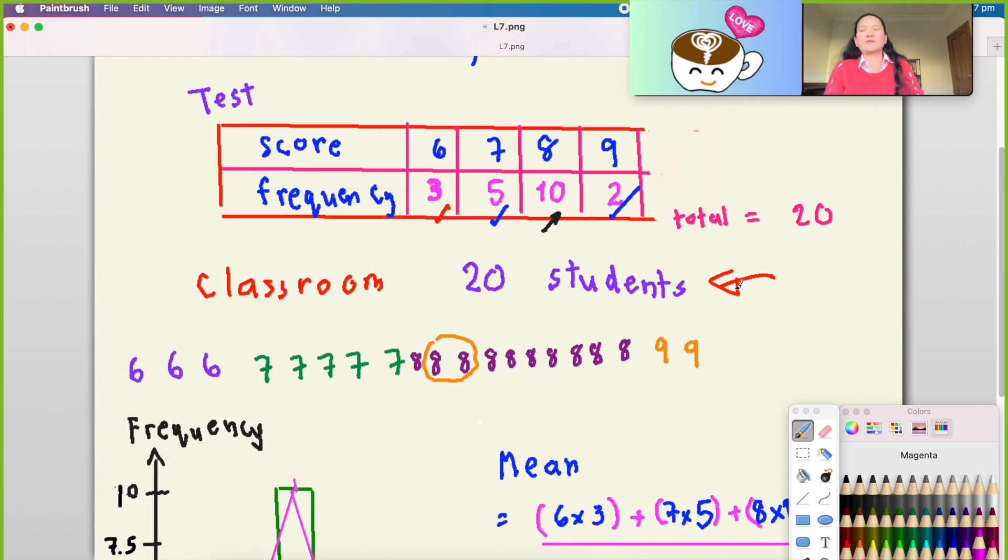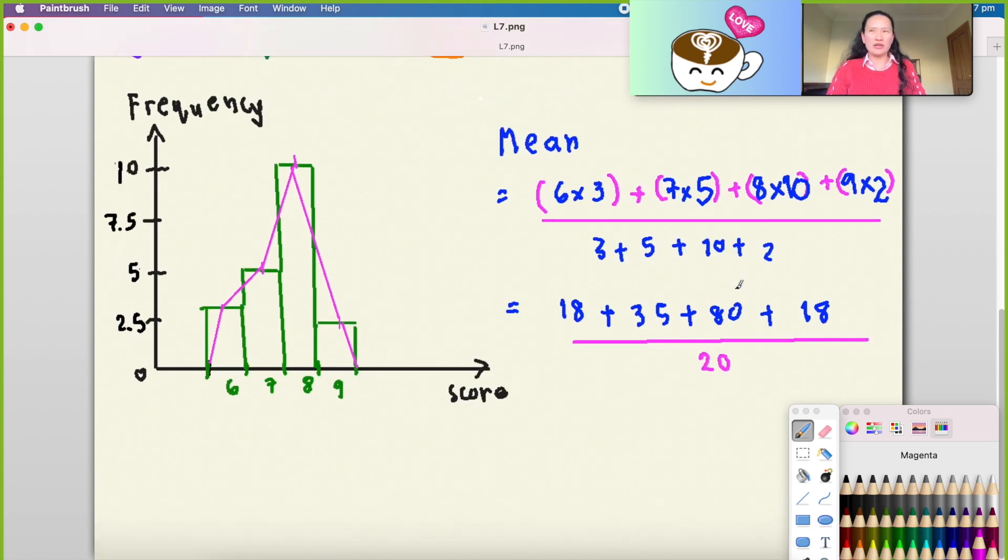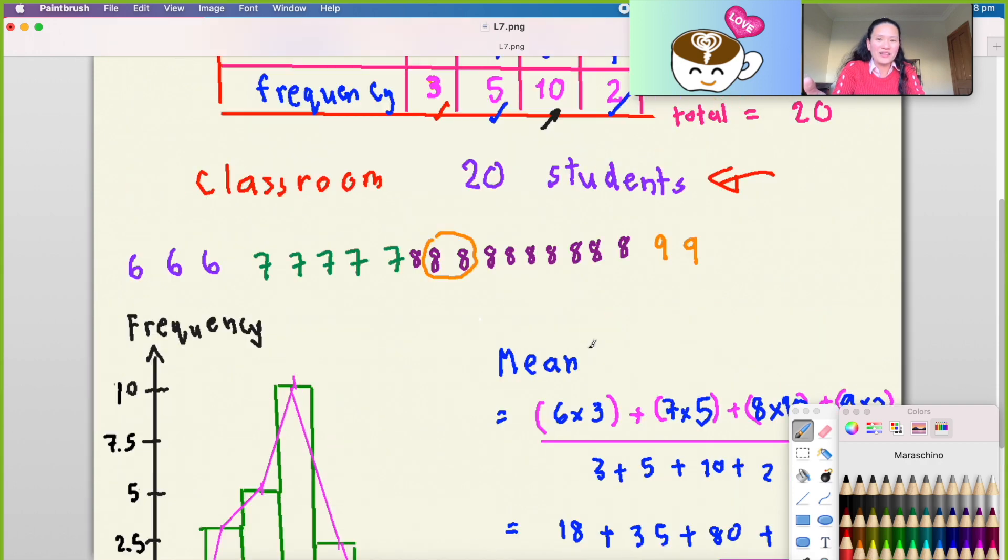Now we sum all of them together. In examination, I encourage you to read questions twice every time. So it comes to replace them all together. Is that 151? Did you get the same number? You can use your calculator. Can you double check? Let's do it: 18 plus 35 plus 80 plus 18 equals 151. So 151 divided by 20 equals 7.55. That means the average score from 10 full marks that all of the students can make is 7.55.